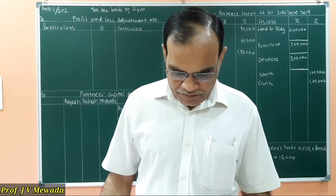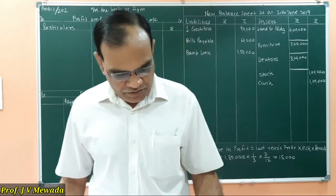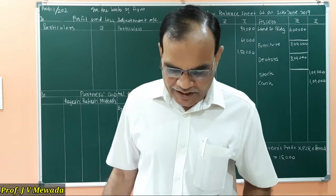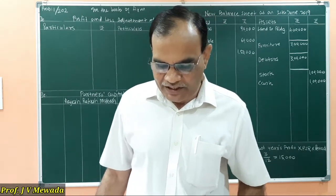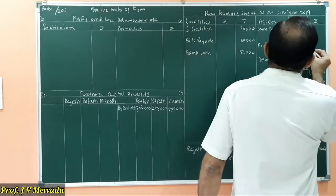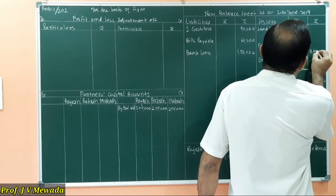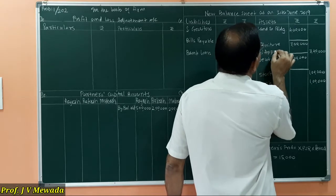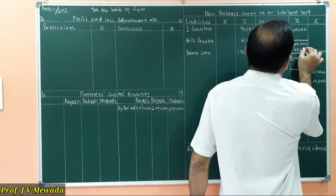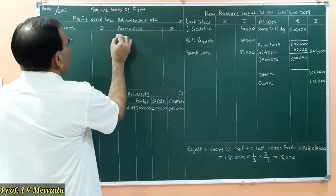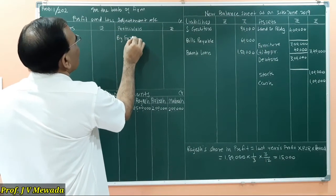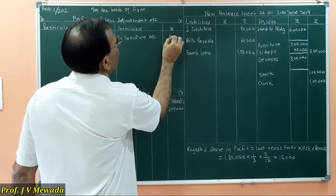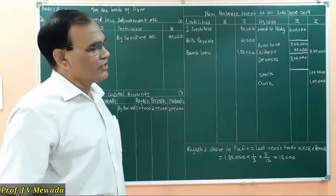Now we have to do the adjustments for revaluation of assets and liabilities. First adjustment: furniture was to be adjusted at market price. The value of the furniture is 3,40,000, so furniture's new value is 3,40,000, meaning there is an appreciation of 40,000. So the second effect: in the Profit and Loss Adjustment Account, credit 'By Furniture Account' 40,000 on the credit side, because there is an appreciation.